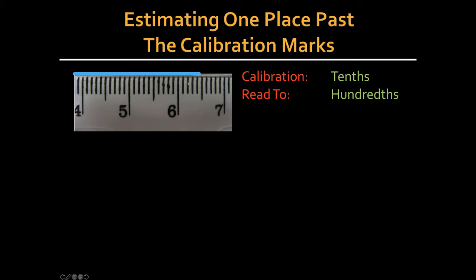This is 6.1, 6.2, 6.3, 6.4. Now it's between 6.4 and 6.5. So we can call it 6.4 something. But it's closer to the 6.5 line than it is to the 6.4 line. In fact, it's almost right on top of that 6.5 line, but not quite. So our measurement could be anywhere from 6.48 to 6.50 centimeters.